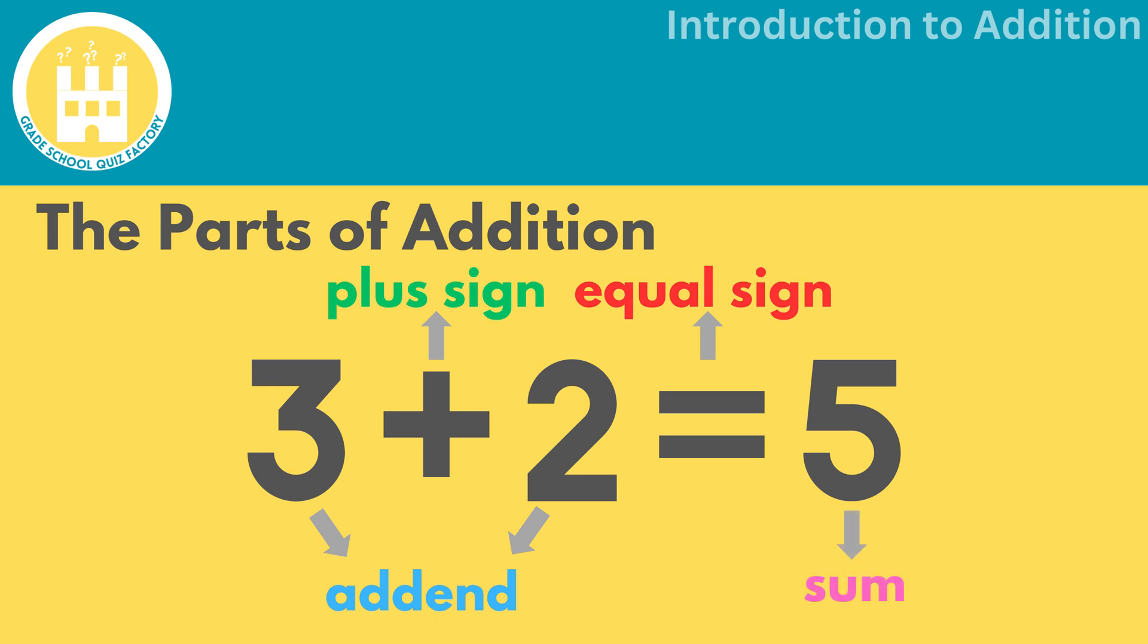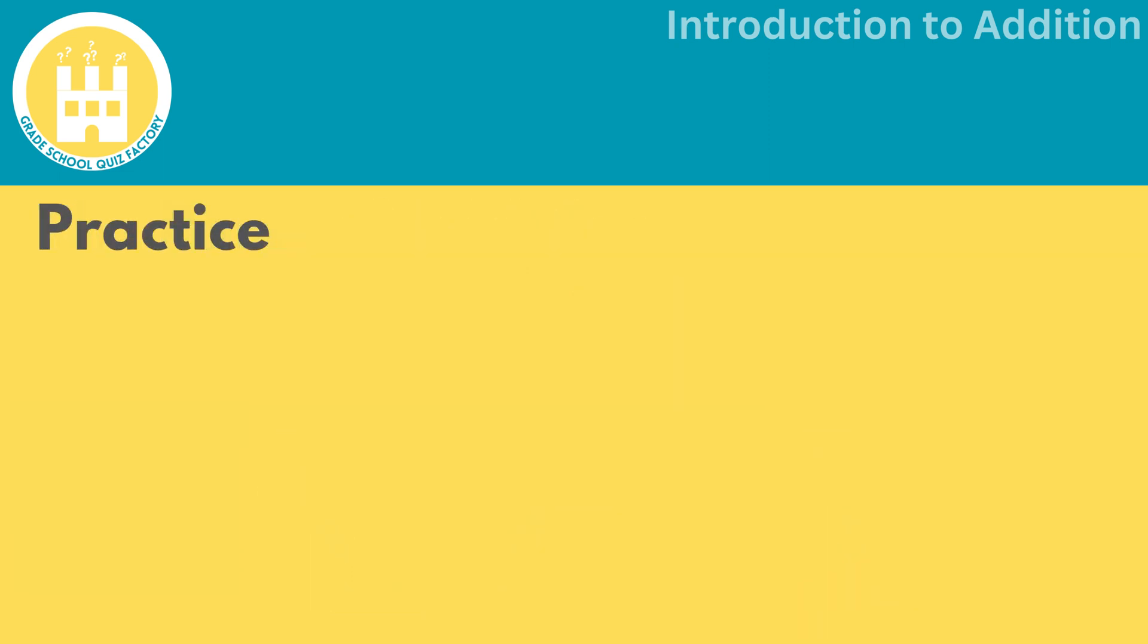Lastly, the final result obtained after adding the addends is known as the sum. Now that we know the parts of addition, let's learn how to actually perform addition.